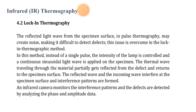The second method is lock-in thermography. The reflected light waves from the specimen surface in pulse thermography may create noise, making it difficult for detection. This issue is overcome in the lock-in thermographical method. In this method, instead of a single pulse, the intensity of the lamp is controlled and continuous light waves are applied on the specimen. The thermal waves traveling through the material partially get reflected from the defects and return to the specimen surface. The reflected wave and incoming waves interfere at the specimen surface and interference patterns are formed. An infrared camera monitors the interference patterns and composite defects are detected by analyzing the phase and amplitude data.